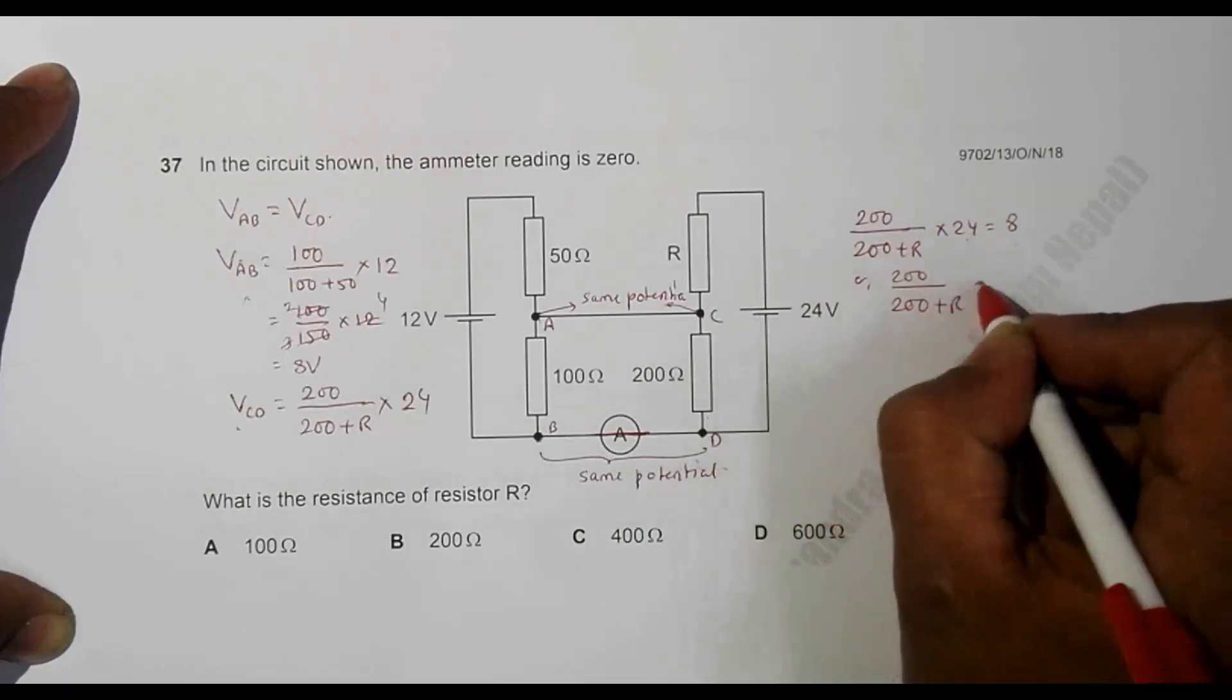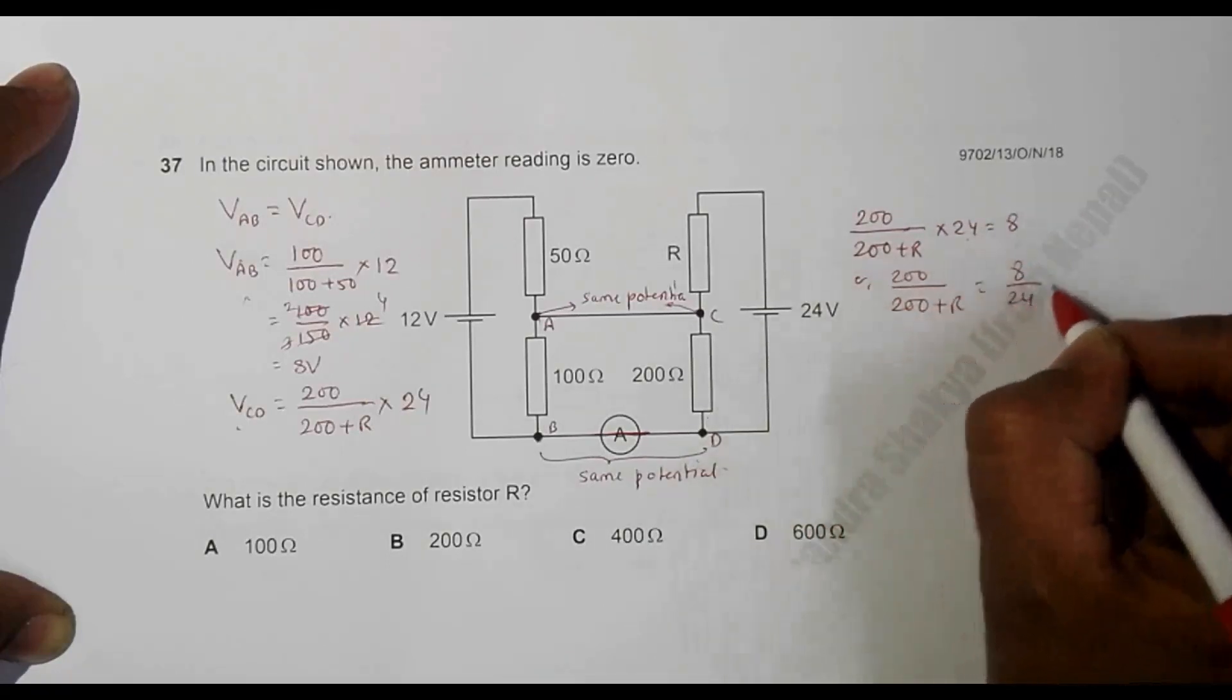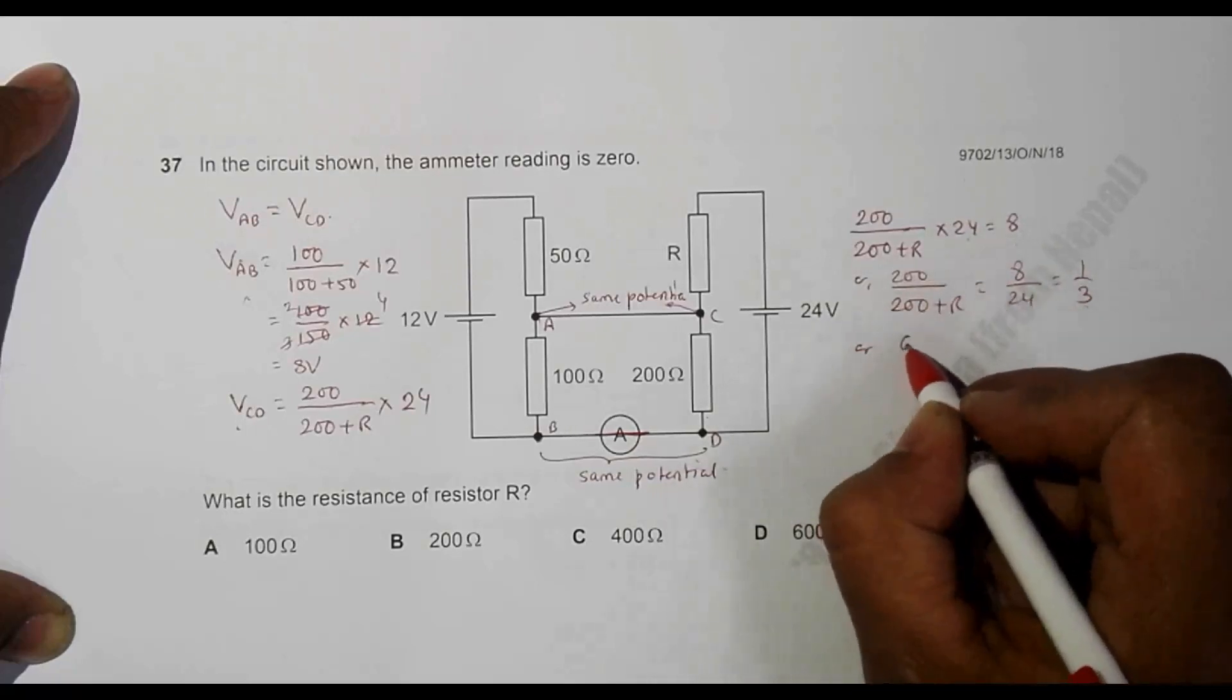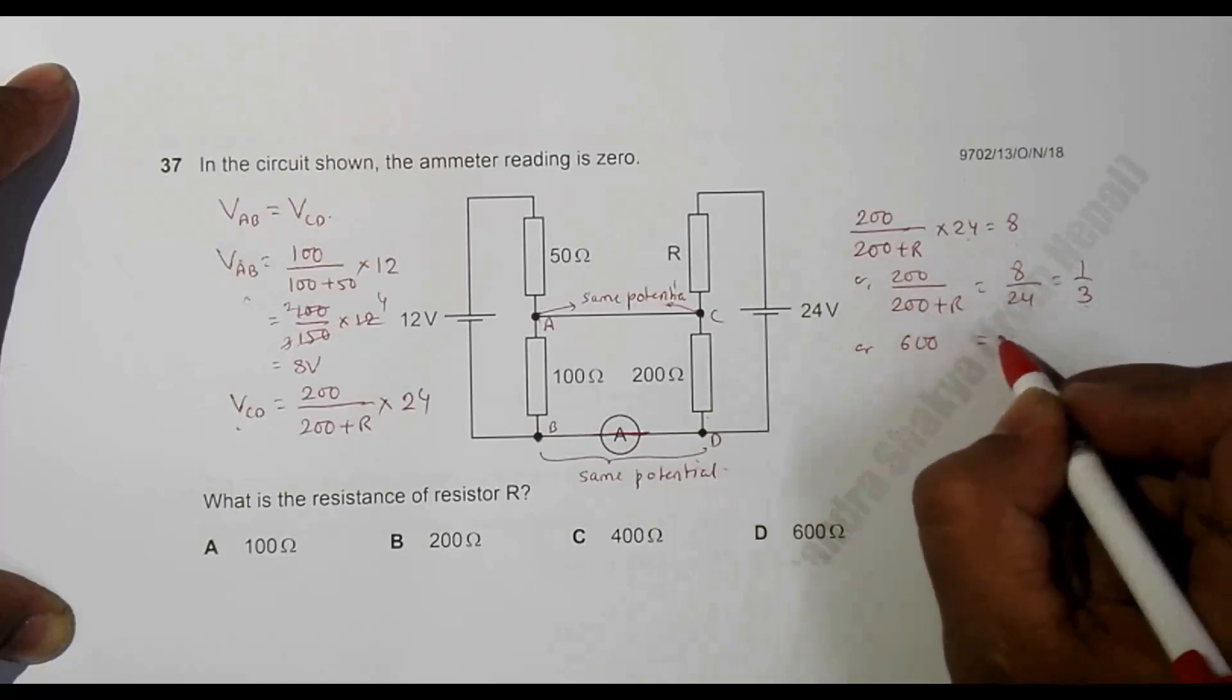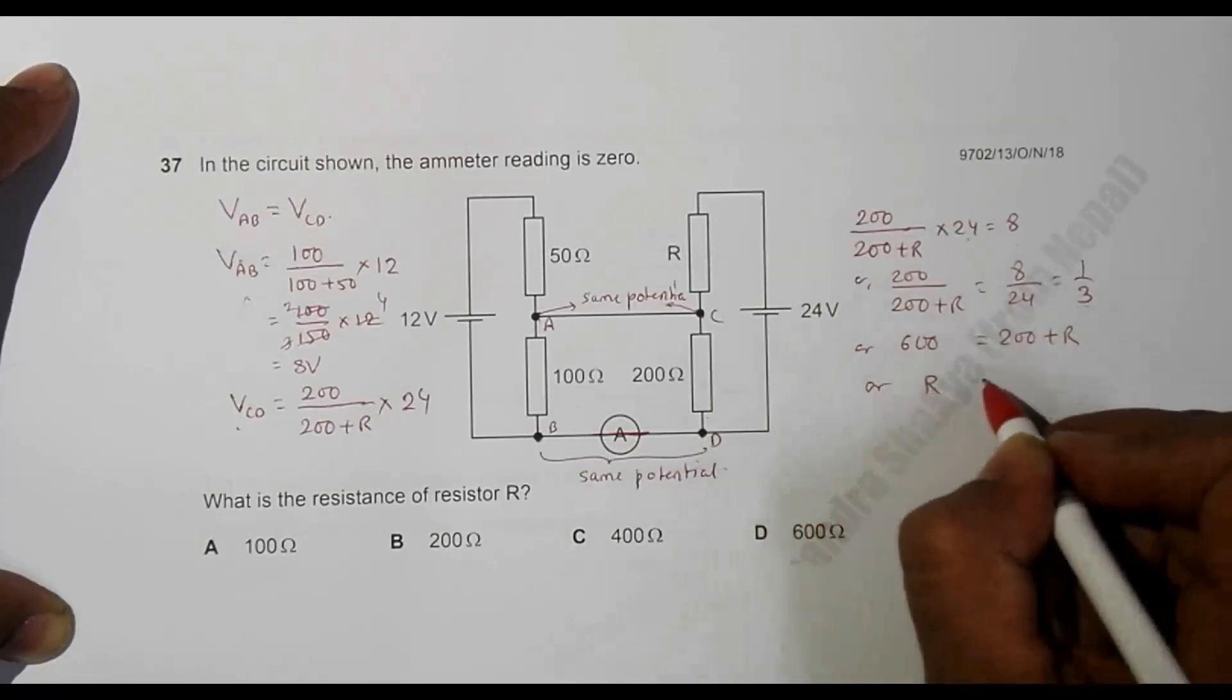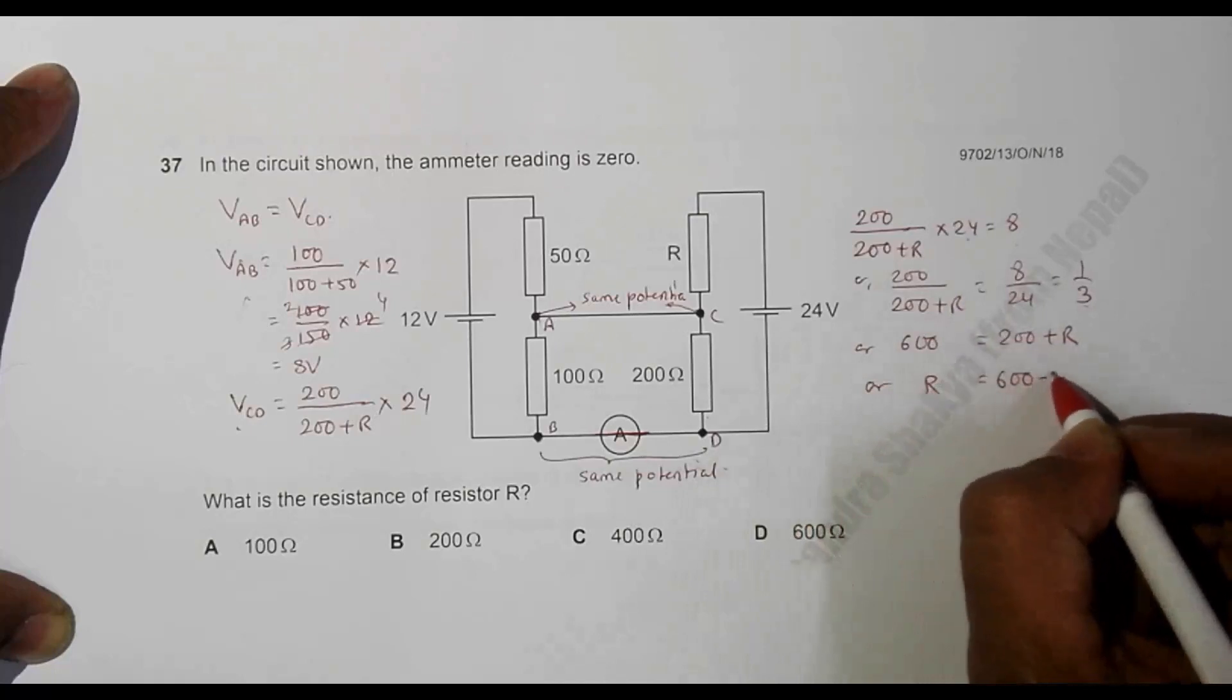Which further gives us—if 3 comes here—it becomes 600, this is equal to 200 plus R, which means that R is equal to 600 minus 200, and that's equal to 400 ohms.